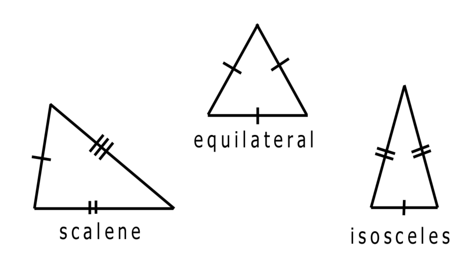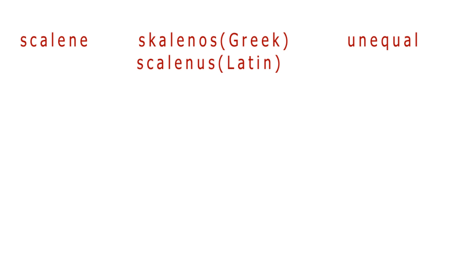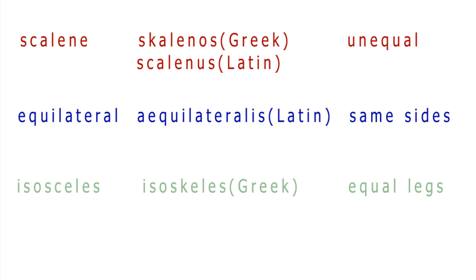Anyway these words, let's have a closer look. Scalene is from the Greek scalenus and the Latin scalenus meaning unequal. Equilateral is from the Latin aequilateralis meaning same sides. Isosceles is from the Greek isoskeles meaning equal legs. And there you have it. Doesn't that feel good?